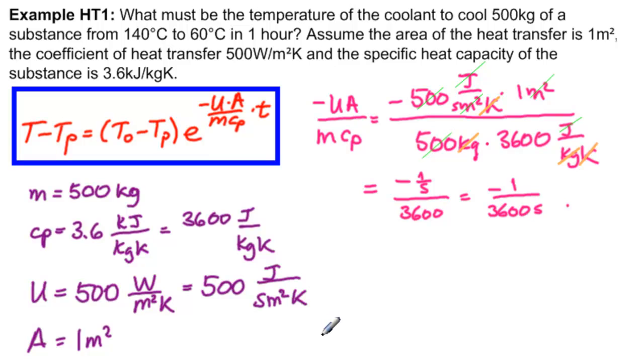We are left with minus 1 over 3600 seconds. Now, what piece of information have we not used? For time we have T0 equals 140 degrees Celsius, and t ending is equal to 1 hour which is equal to 3600 seconds. And T, the temperature at the end, which is T of t end, is 60 degrees Celsius.